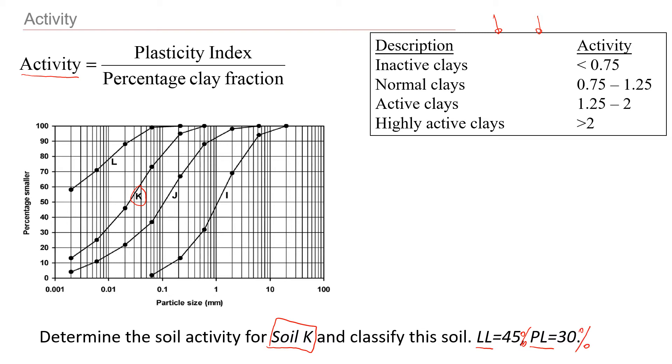To estimate the activity of soil, what we need to know is the plasticity index here. And you already may know that it's liquid limit minus plastic limit. And then we will divide it by the percentage of clay fraction. And if you don't remember, clay fraction starts with particle size less than 0.002 millimeters.